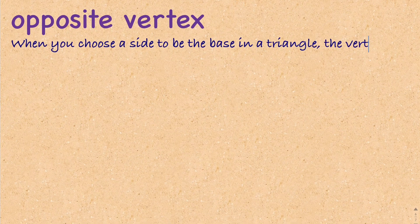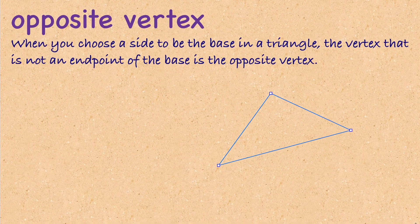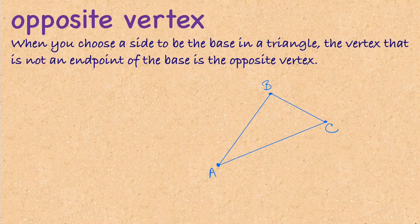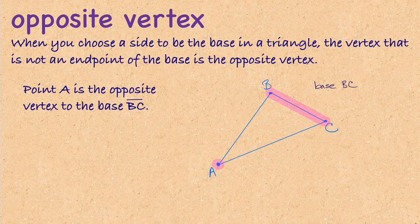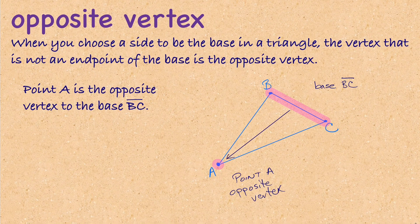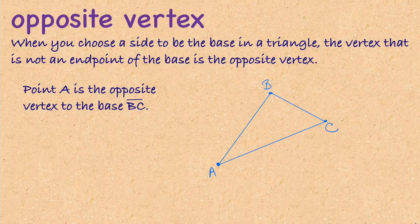The next word is 'opposite vertex.' When you choose a side to be the base in a triangle, the vertex that is not an endpoint of the base is the opposite vertex. Here we have a triangle labeled A, B, and C. If we pick side BC as the base, then point A is the opposite vertex. There are three points; two touch the base and the other is the opposite vertex. We need to understand the opposite vertex because it helps us determine the height of a triangle. If AC is the base, then B is the opposite vertex; and if AB is the base, then C is the opposite vertex.